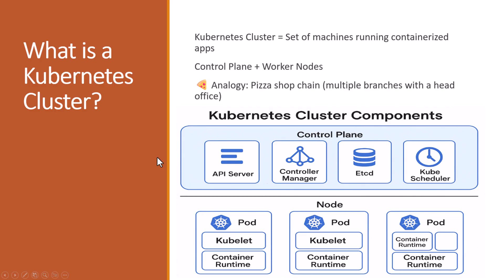What is a Kubernetes cluster? A Kubernetes cluster is just a group of machines working together to run applications in a container. In our pizza shop analogy, think of it like a chain of pizza stores. Each store is a node, making pizza means your application, and there is one central head office — the control plane — that manages everything across all the stores.